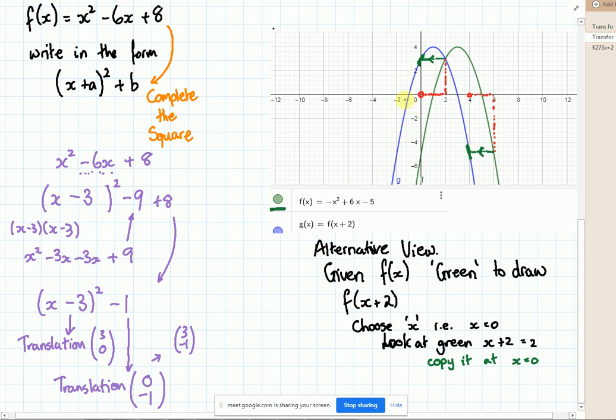If I want to do a minus 2, look forward 2, come down, see what the graph is doing at that point, copy it.